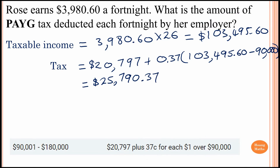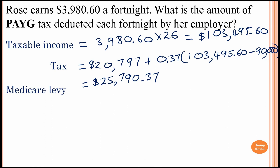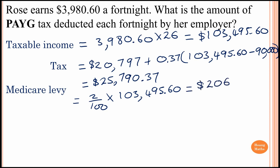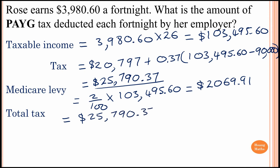After paying income tax, she also needs to pay the Medicare levy. The Medicare levy is 2%, so that is 2 over 100 times the taxable income of $103,495.60, which equals $2,069.91.